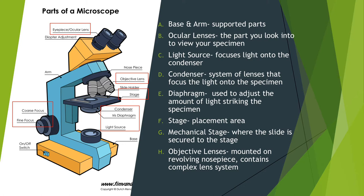Your specimen will be placed on the stage and secured by the mechanical stage. The objective lenses are mounted on a revolving nose piece, and each one of them can contain a complex lens system to help you view your specimen better.